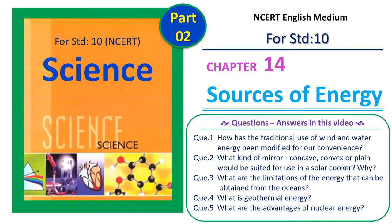Before starting, let me tell you which questions will be discussed in this video. The first question is: how has the traditional use of wind and water energy been modified? The second question: what kind of mirror — convex, concave, or plain — would be suited for the solar cooker, and give reasons. Third: what are the limitations of the energy that can be obtained from the oceans? Fourth: what is geothermal energy? And the fifth question: what are the advantages of nuclear energy?